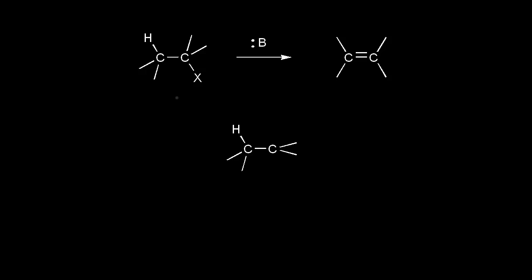Let's look at the mechanism for an E1 elimination reaction. We'll start with our substrate on the left. Let's say we're dealing with an alkyl halide. The carbon bonded to our halogen would be the alpha carbon, and the carbon next to that would be the beta carbon. We need a beta hydrogen for this reaction.